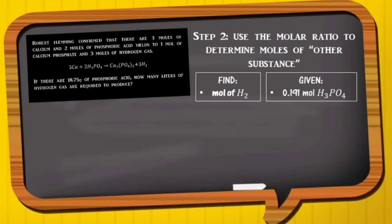For the second step, we have 0.191 moles of phosphoric acid and we want to use the molar ratio. So we want to cancel moles of phosphoric acid. So we put 2 molecules of phosphoric acid at the bottom and hydrogen gas at the top.